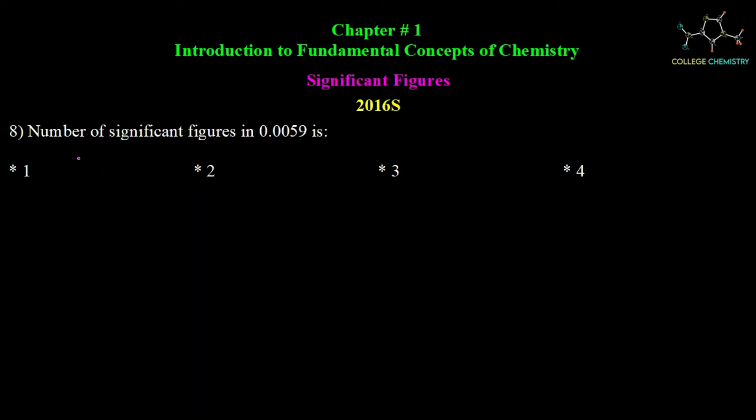Question number 8: the number of significant figures in 0.0059. Since there is a decimal point, we consider left to right from the first non-zero digit.